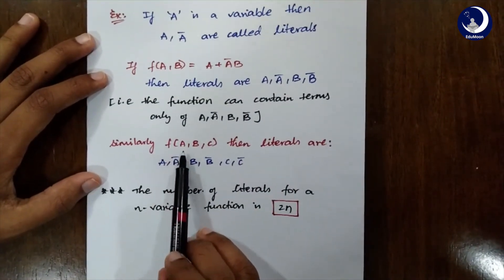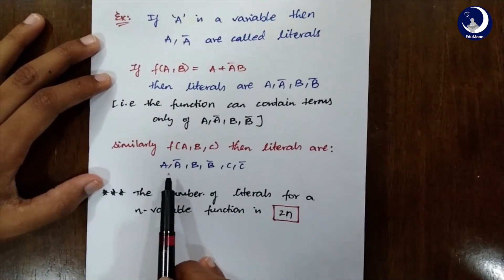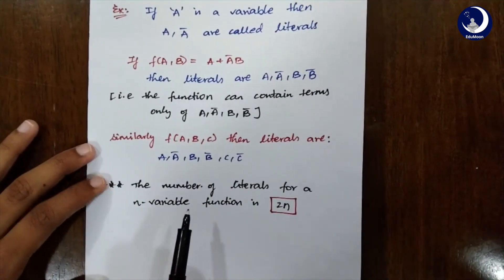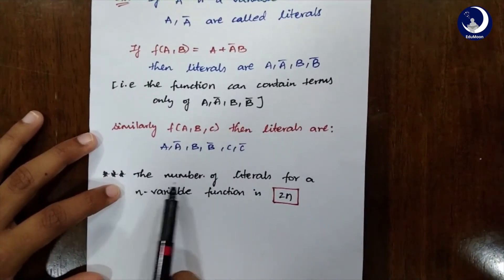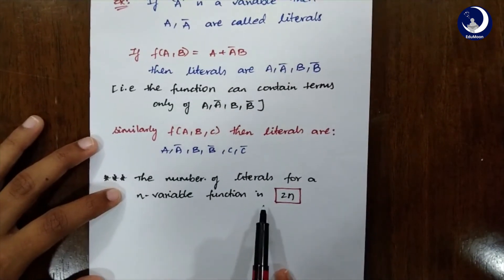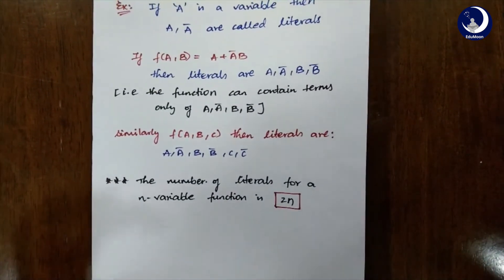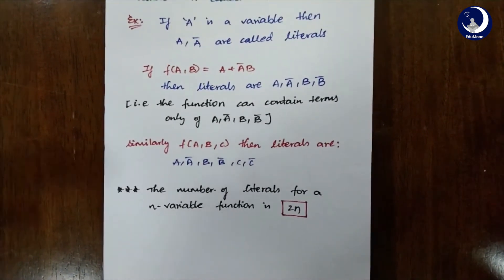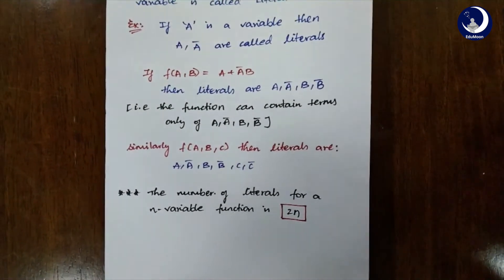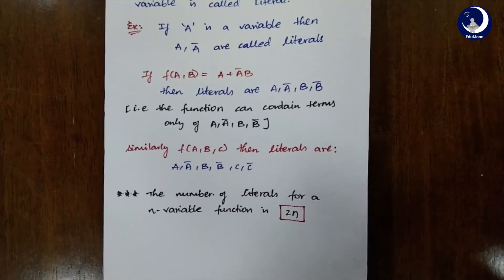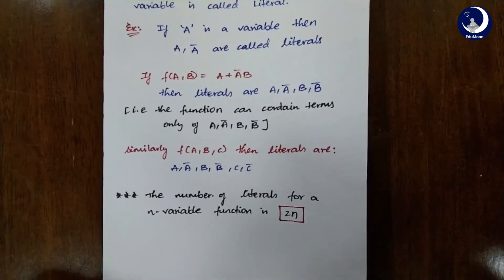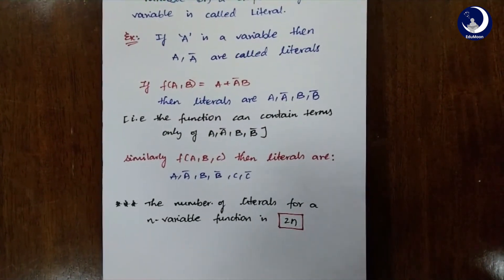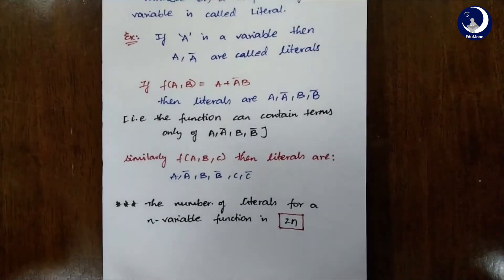Similarly, if F is a function of A, B, C then we have the literals A, Ā, B, B̄, C, and C̄. To sum up, the number of literals for an n-variable function is 2n. So till here we have completely dealt with the fundamentals, properties, and more of Boolean expressions. In the next video we will be solving a few problems so that you will have a greater idea of what I explained till now. So till then, stay tuned to Edumon. Thank you.